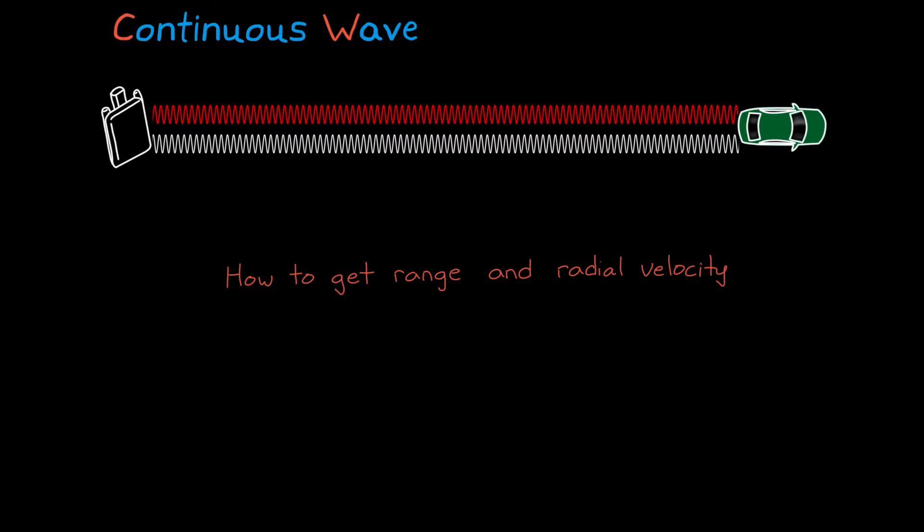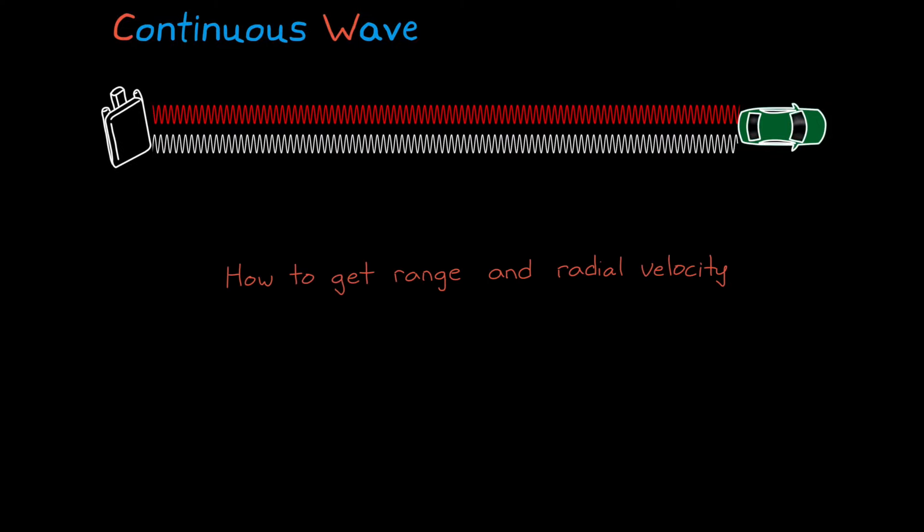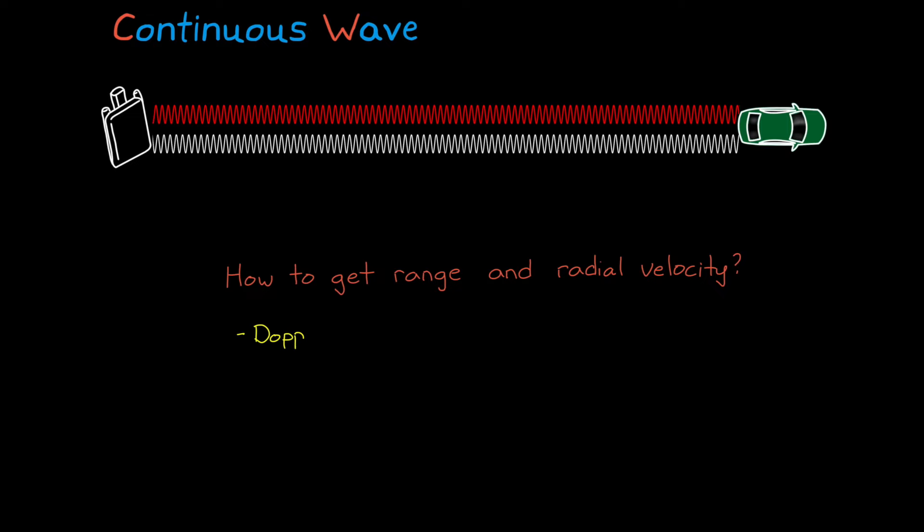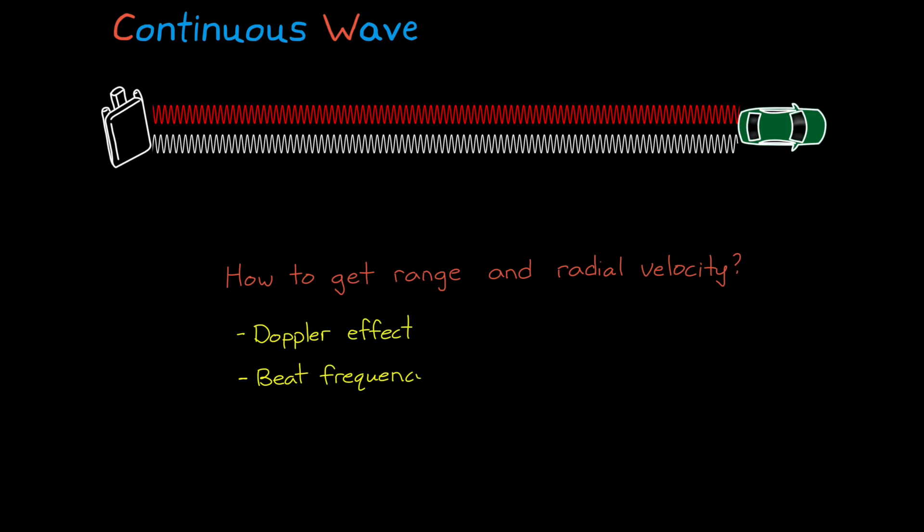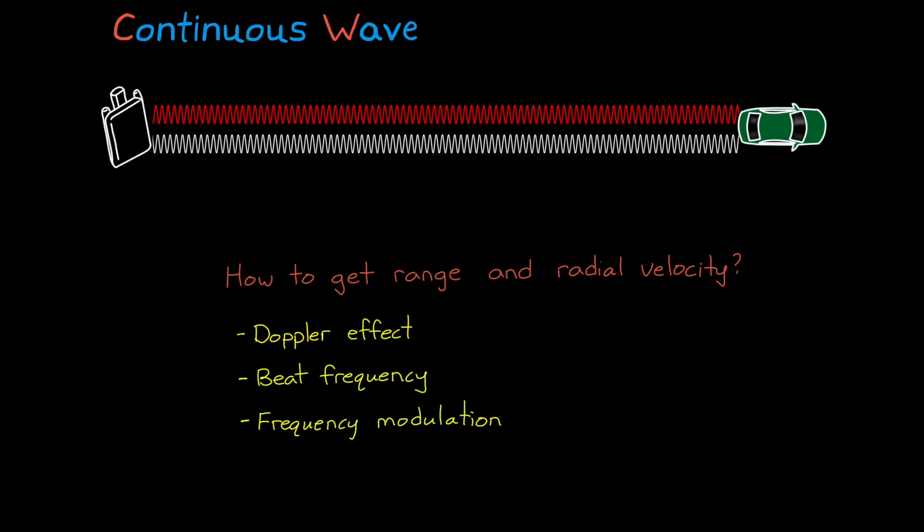Getting range and radial velocity from continuous waves might not seem obvious at first, but this is where the Doppler effect, beat frequency, and frequency modulation come into play.